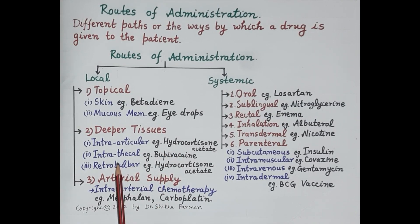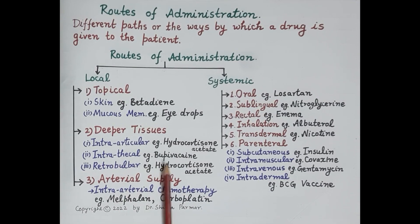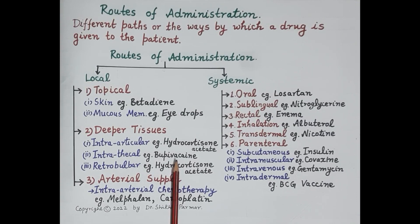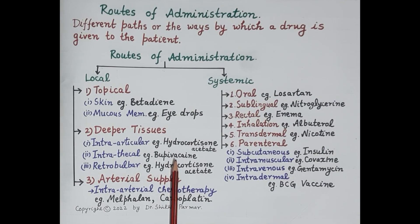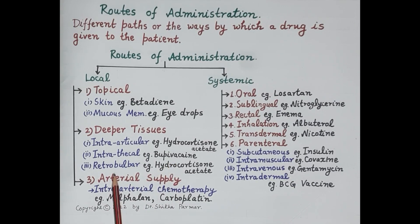In the intrathecal route, the drug is injected into the spinal cord. For example, bupivacaine is administered by the intrathecal route and is used for short procedures as it produces anesthesia — this is spinal anesthesia.